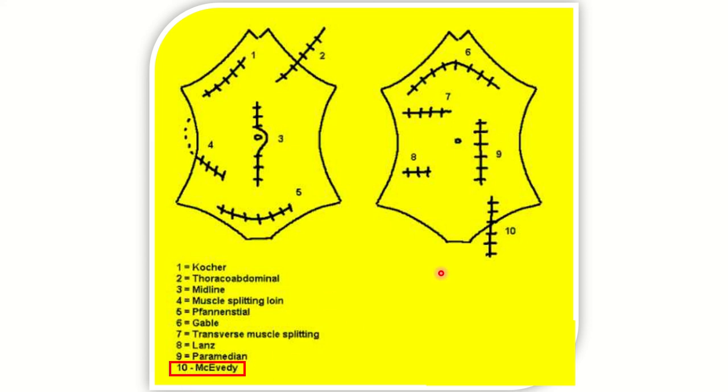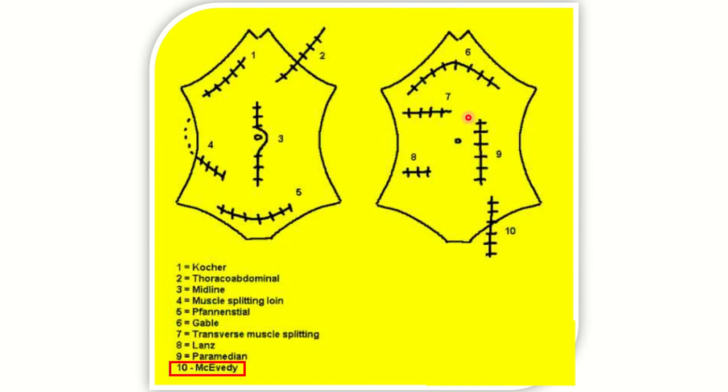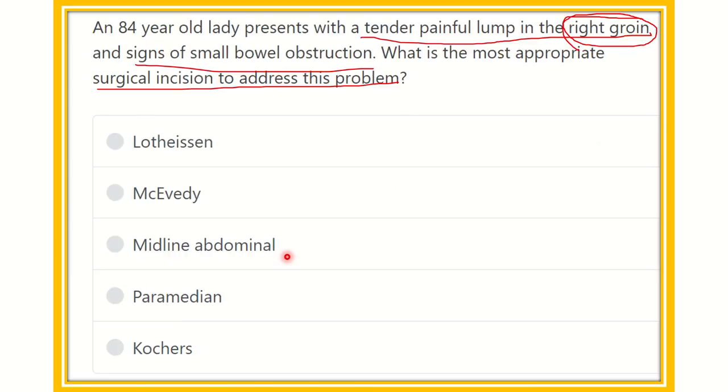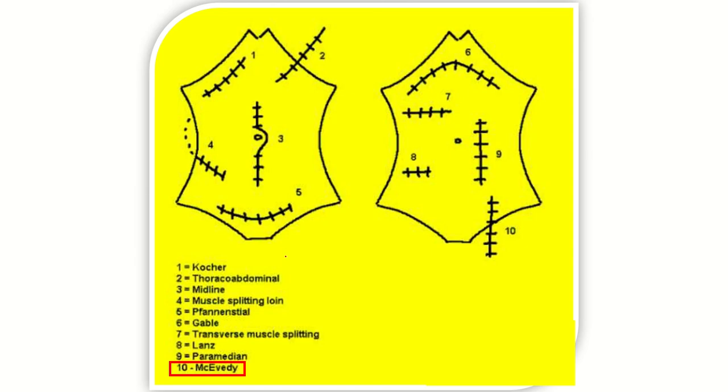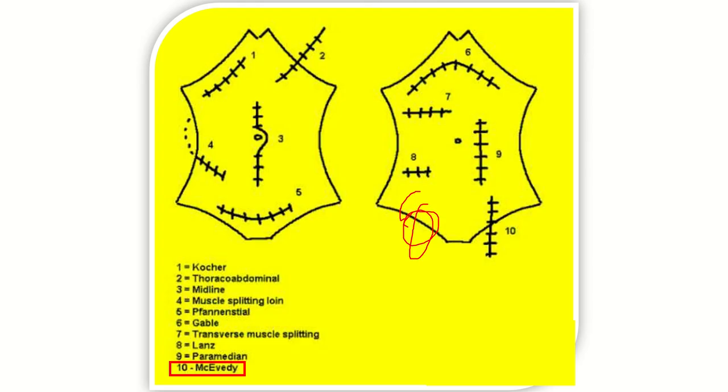We saw that the problem is in the right groin, so if you will see here, the problem is in this groin area. We have to choose one of the incisions which is suitable for this patient. That means this area, so the number 10 incision - the McEvedy incision - may be suitable for the patient.